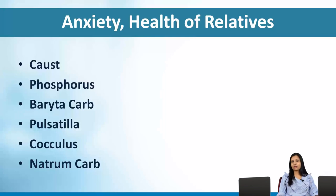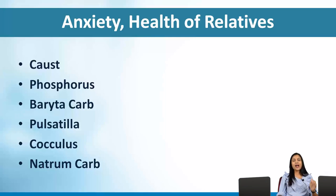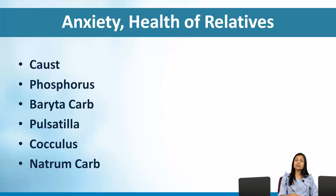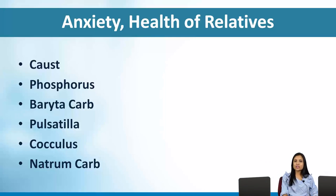If you look at Baryta Carb and Pulsatilla, the anxiety with relation to relatives' health is because they feel a sense of dependence on those people. Both are extremely dependent remedies. Pulsatilla because they are more of yielding, diffident, timid people who cannot make decisions on their own and need the help of others. Baryta Carb is because there is a genuine dimness of the intellect — not mental retardation, but they genuinely do not have a lot of common sense, which is why they are very dependent on family and relatives.